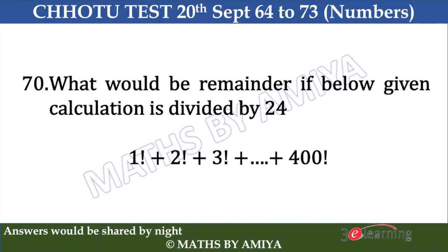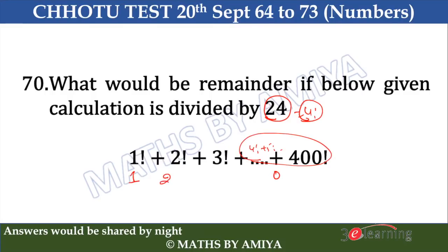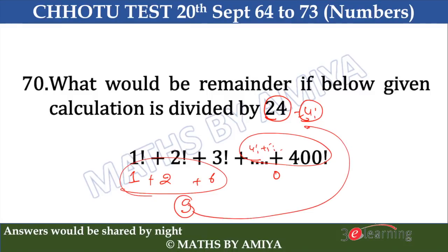Question 70: 17 factorial divided by 24. Now 24 is 4 factorial. So we get remainder 0 after 4 factorial. We need to consider 1! + 2! + 3! = 1 + 2 + 6 = 9. We need to divide 9 by 24, and since 9 is a small value, the answer is nothing but 9.